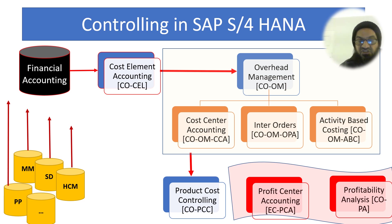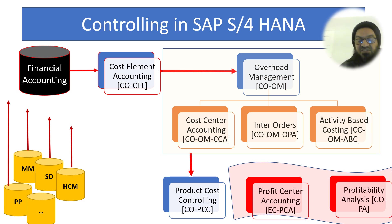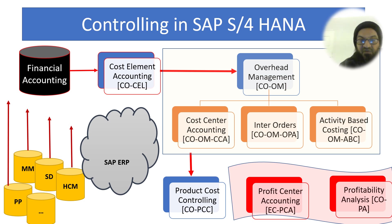The remaining two modules are for analytical purposes: Profit Center Accounting and Profitability Analysis. Profit Center Accounting is based on the organization's internal structure — profit centers that earn revenues and incur expenses, having their own profits. Profitability Analysis, on the other hand, analyzes costs, revenues, and profits based on external objects like market segments or countries.